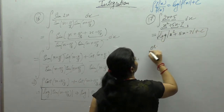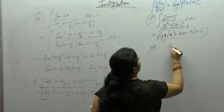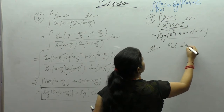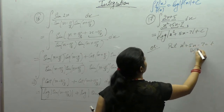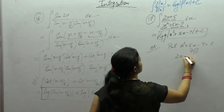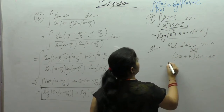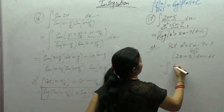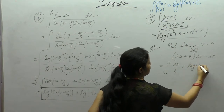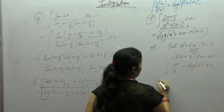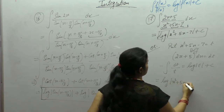Alternatively, put the denominator as t and differentiate: derivative of x² is 2x + 5, so (2x+5) dx = dt. Then the integral becomes ∫(1/t) dt = log t = log|x² + 5x - 7| + C.